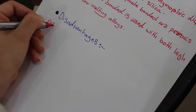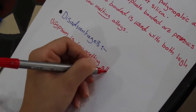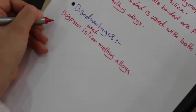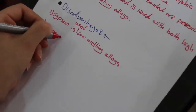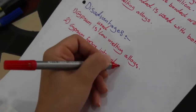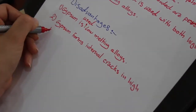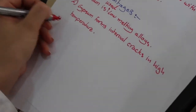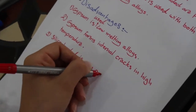Disadvantages: one, gypsum is used only for low melting alloys. Two, gypsum forms internal cracks at high temperature. Three, silica bonded is non-porous.